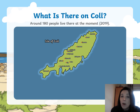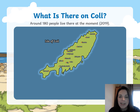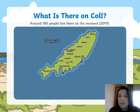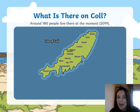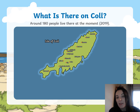So what is there on Coll? This information is about two or three years out of date, but at that time around 180 people lived there. That's not very many people at all — if you think there are more than 180 children in our school, but on one island there are fewer people than that.